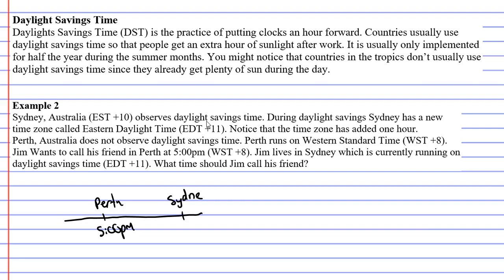Sydney is ahead of Perth in time, and Sydney is running on daylight savings time. Jim wants to call at a particular time in Sydney so that when he calls his friend, his friend picks up the phone at 5 o'clock. Notice that Sydney is on plus 11 and Perth is on plus 8, so we just go 11 minus 8, which is 3 hours. That means 3 hours ahead of 5 o'clock, so 8 p.m. If Jim picks up the phone at 8 o'clock in Sydney and calls his friend in Perth, his friend is going to pick up the phone at 5 o'clock. So our answer is 8 p.m.